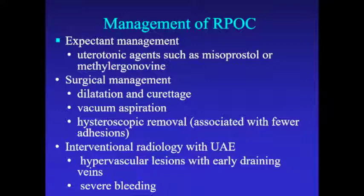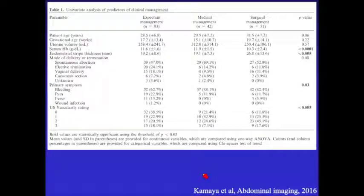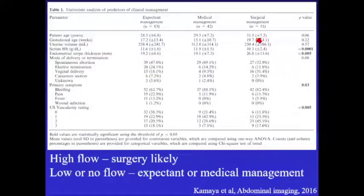For management, expectant management may use uterotonic agents such as misoprostol or methylergonovine. Surgical management includes D&C or vacuum aspiration; hysteroscopic removal is increasingly used due to fewer post-intervention adhesions. We want to reserve interventional radiology with uterine artery embolization for cases that are very hypervascular, suspected to have early draining veins, or involve severe bleeding. A study by Kamiya in abdominal imaging found that high flow predicted surgical management, while low or no flow predicted expectant or medical management.